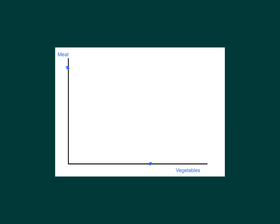There are various points in between: give up some meat, move down and over to get some vegetables. As we keep giving up meat we get more vegetables, and if you connected all those points you'd get something like this — our production possibilities frontier, PPF, sometimes called the production possibilities curve, PPC. The line itself shows the points that are possible for the economy to make and efficient.